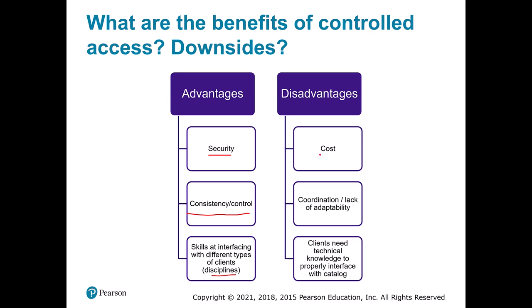Now of course there are some disadvantages. The first one is cost — we have to pay the person, and so a Database Management System, DBMS, is going to be expensive. This coordination also results in a lack of adaptability. In the hallway example you could make a new stack whenever you feel like it, move things around, let things emerge over time. But once we have this librarian role, they're going to have to work to make sure everybody's happy with changes. We also need technical knowledge to handle the catalog — like figuring out the Dewey Decimal System.